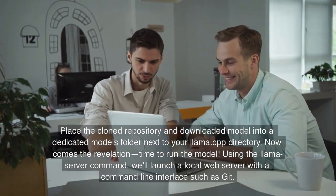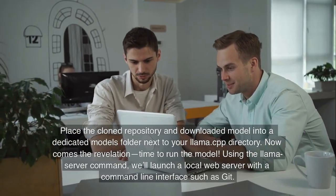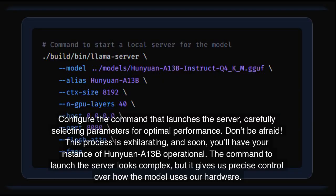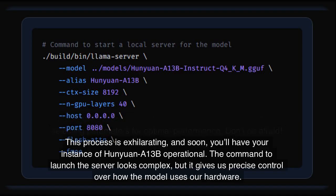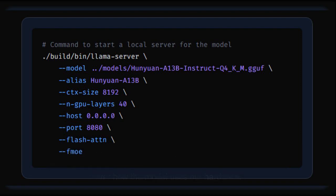Now comes the revelation — time to run the model. Using the Llama server command, we'll launch a local web server with a command line interface such as Git. Configure the command that launches the server, carefully selecting parameters for optimal performance. Soon you'll have your instance of Hanyuan A13B operational. The command looks complex, but it gives us precise control over how the model uses our hardware.